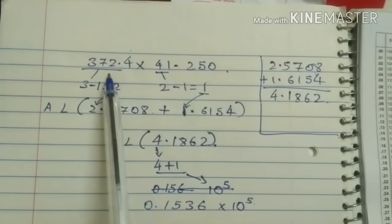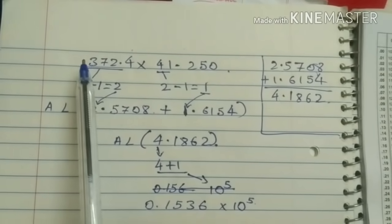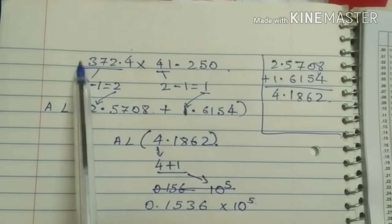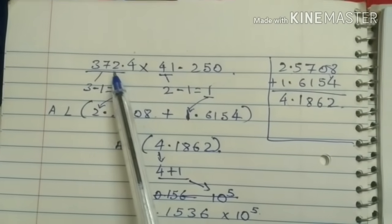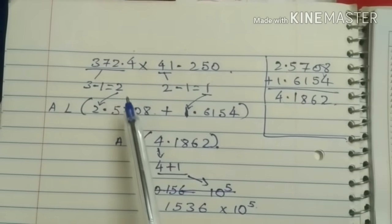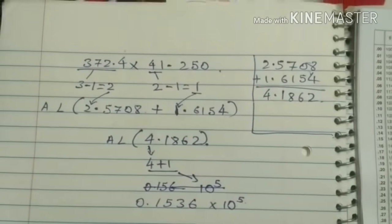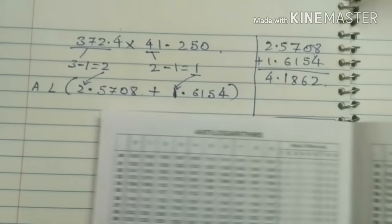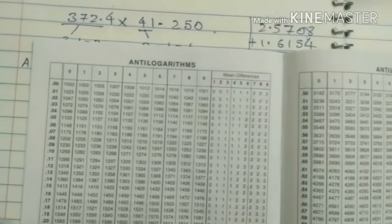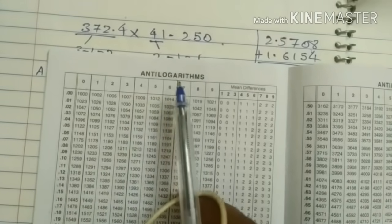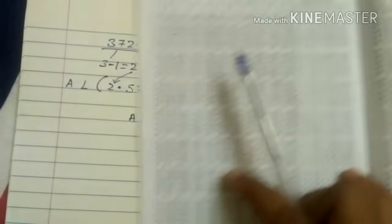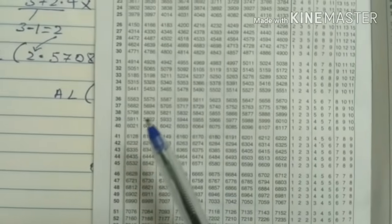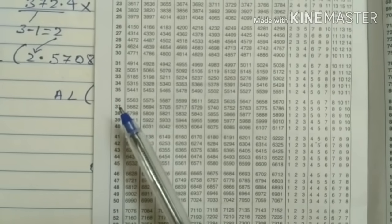So 3, 7, 2, 4. In log table, first we have to find log of this 3, 7. So and after that in table number 2 and we have to add fourth numbers main difference. So we will see in the log table. So here is the log book. So this is antilog. So first we have to find log logarithm in log table. So first in log table if you will see 3, 7. Where is 3, 7? 3, 7 is here.